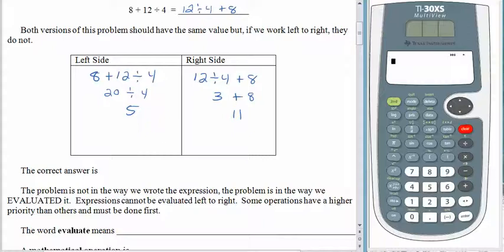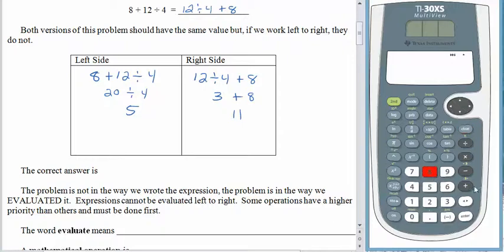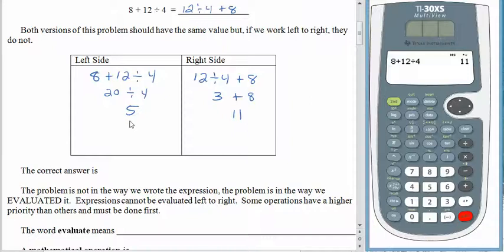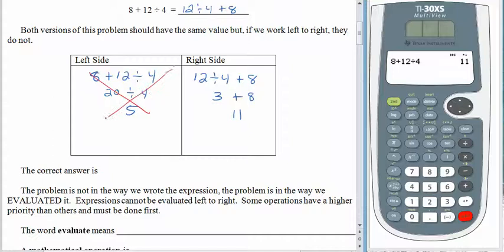Did we do something illegal by rearranging this problem? Let's check. Let's work with our calculator. If we had 8 plus 12 divided by 4, the calculator says the answer is 11, and we got 5. So something is definitely wrong — not with the way the problem was written, but with the way that we worked the problem. Apparently, you can't just go left to right. So let's cross this off, because we don't want bad things to stay in our field of view.